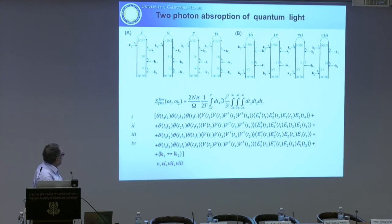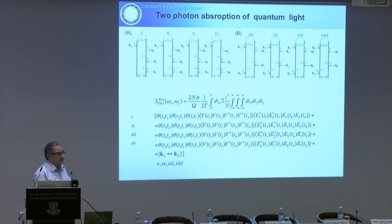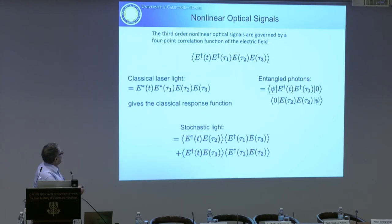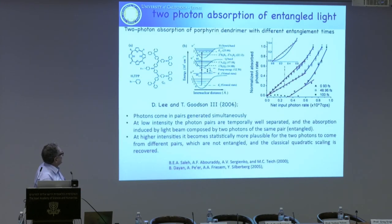In general, when you calculate a signal it is given by a correlation function of the dipole and a correlation function of the field. When you have entangled photons, they give a particular field correlation function, providing a new window on the molecule. For third-order signals you have four fields; with classical light it is simply a product of amplitudes, with entangled photons it breaks up in a certain way, and with stochastic light it breaks up differently — each giving a different view of matter.